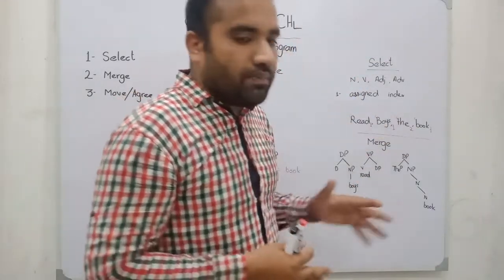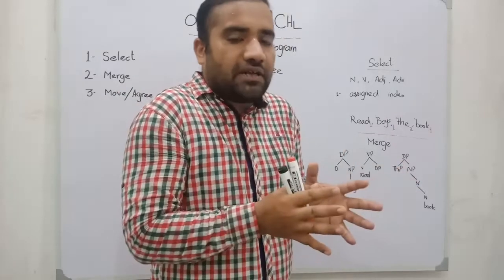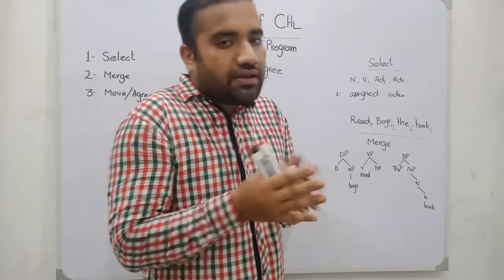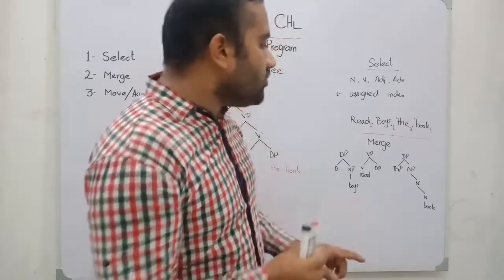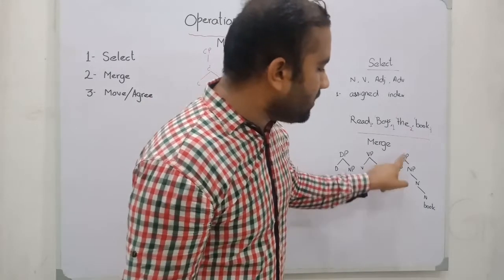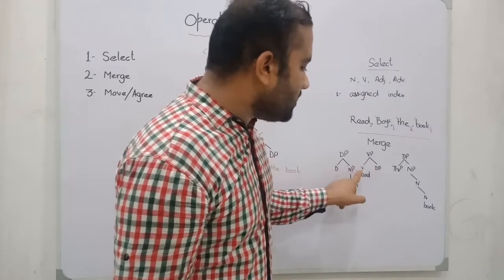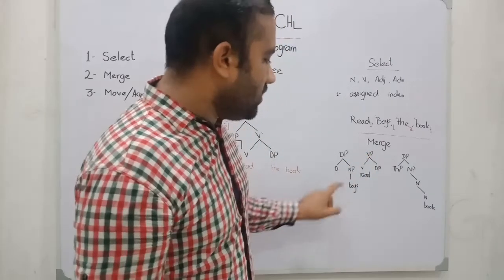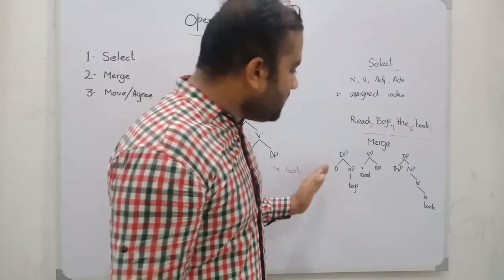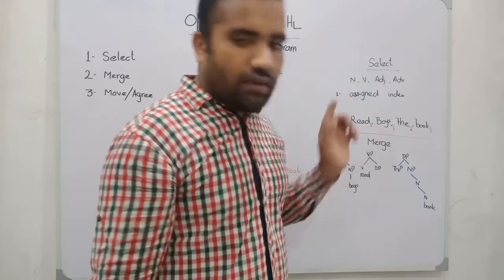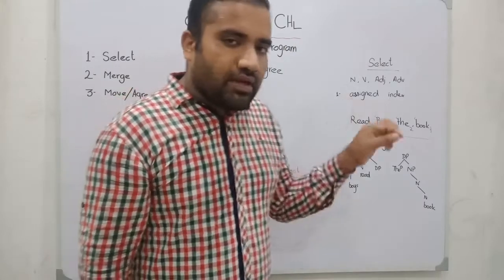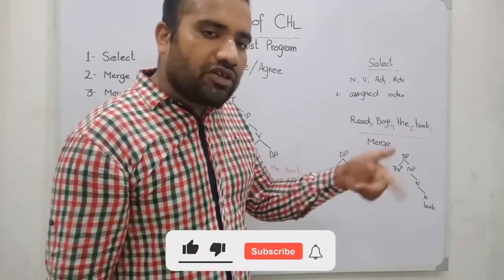Then we have operation merge. Operation merge merges items together on the basis of the head and complement relation. The noun 'book' merges with the determiner D, and in this way it becomes a DP. The DP then merges with the verb V, and in this way it becomes a VP. The NP merges with D to become a DP. This means the head selects the complement position, and in this way the derivation proceeds.